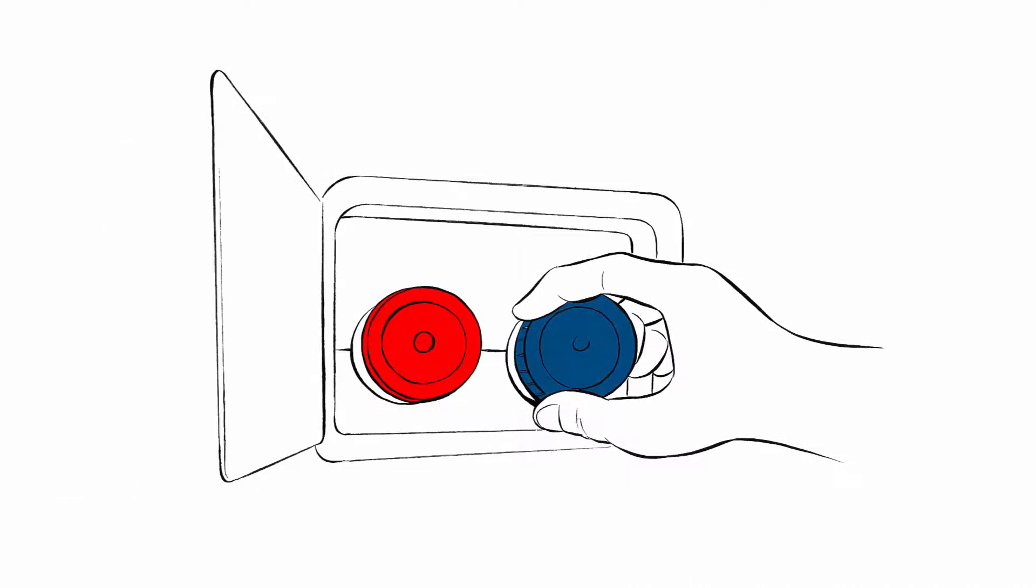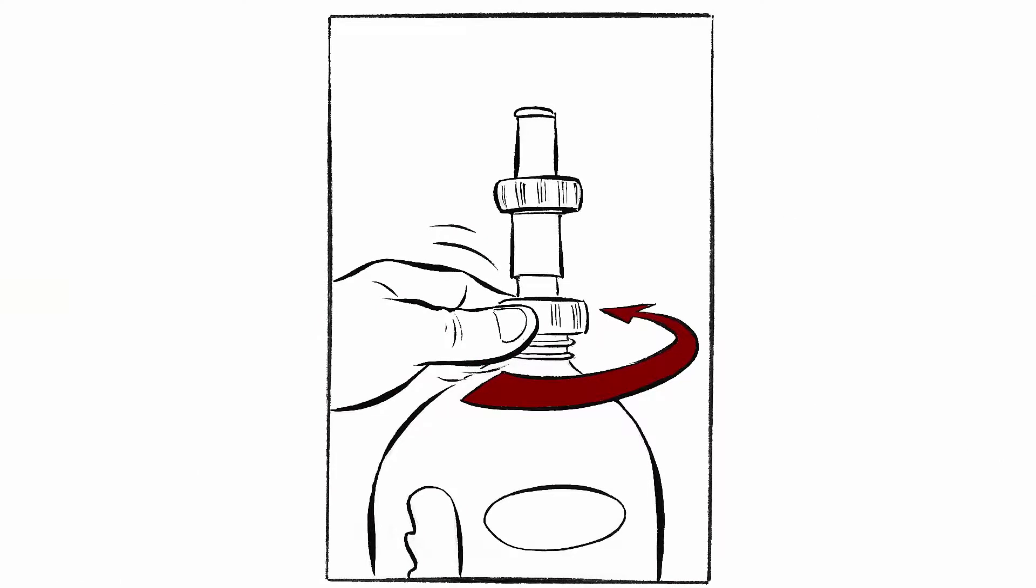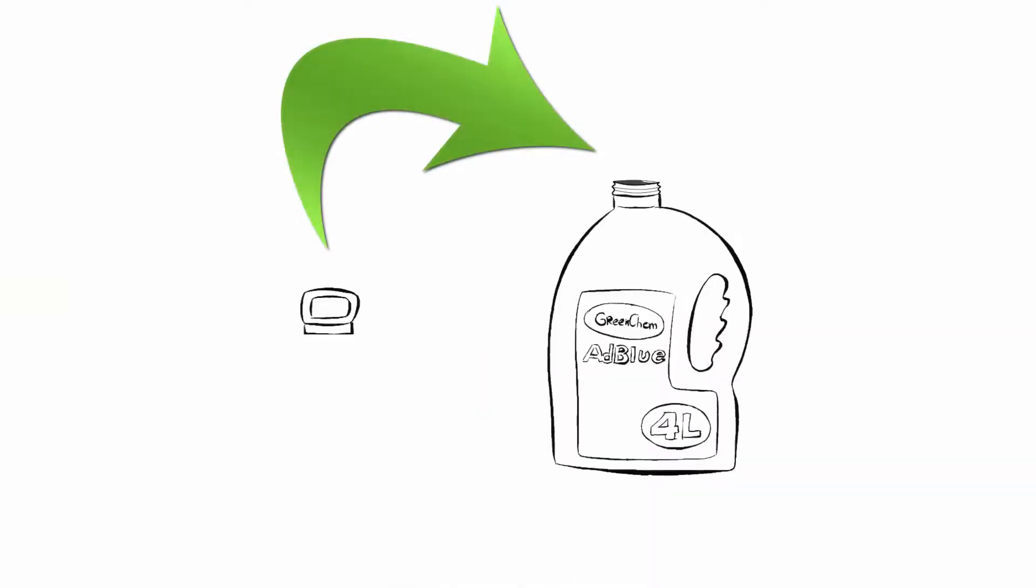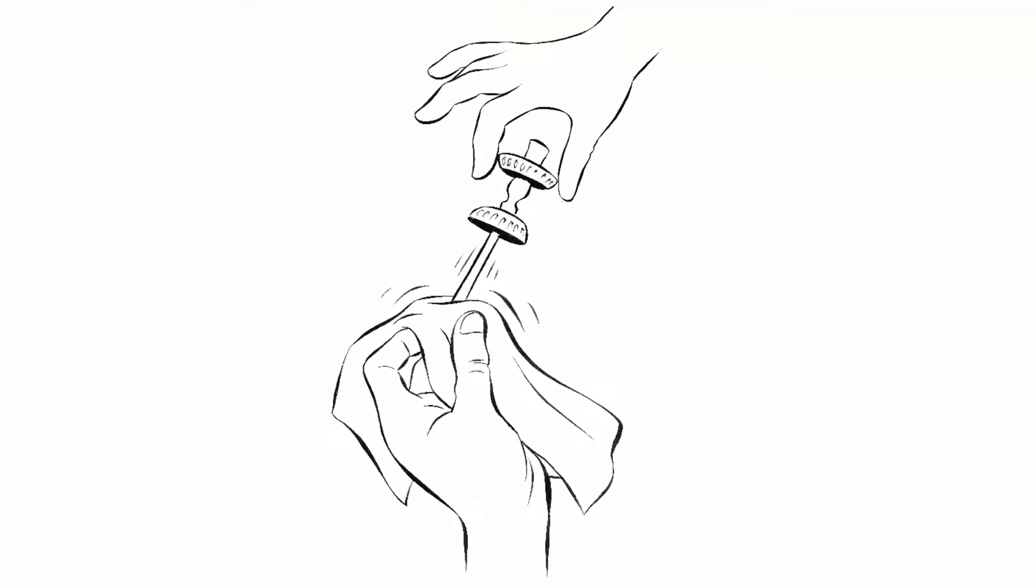Apply the AdBlue tank cap back on the car and it is ready to run again. If the bottle is not fully empty, unscrew the dispensing tool and close the can with the cap. Make sure you clean the nozzle and tube using a clean paper cloth so you can store the dispensing tool in a small plastic bag for next usage.